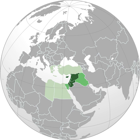The largest religious group in the Levant are the Muslims and the largest cultural-linguistic group are Arabs, due to the Muslim conquest of the Levant in the 7th century and subsequent Arabization of the region. Other large ethnic groups in the Levant include Jews, Kurds, Turkmens, Assyrians and Armenians. The majority of Muslim Levantines are Sunni, Alawi, or Shia Muslim.